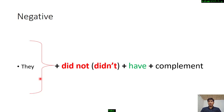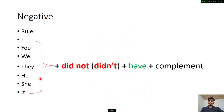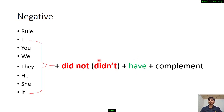For negative, here is the rule: subject — I, you, we, they, he, she, it — plus 'did not' (short form: didn't), plus the base form 'have,' plus complement. In positive we use 'had,' but in negative form we use the base form after 'didn't,' which is 'have,' because 'did not' already carries the past tense.